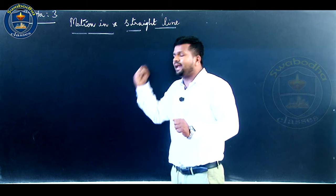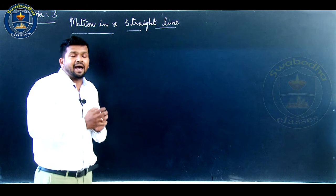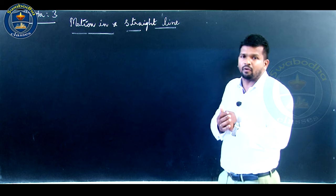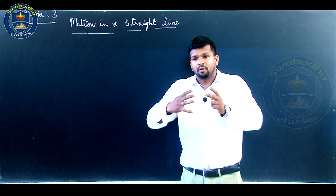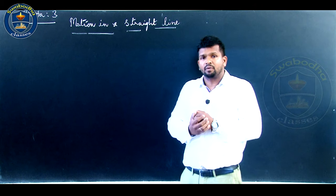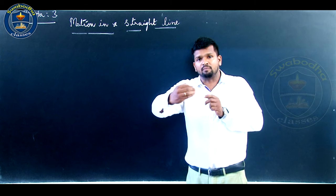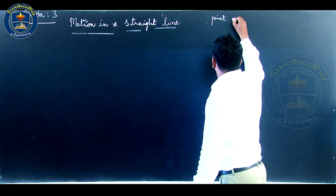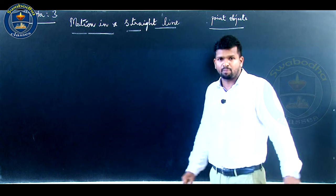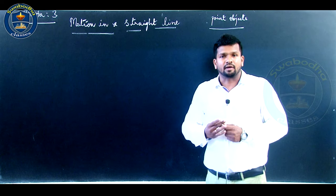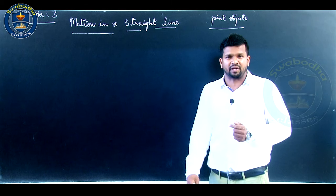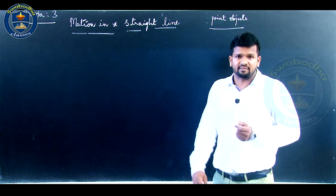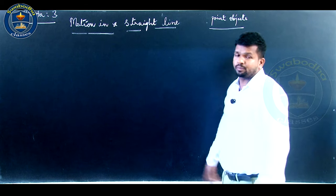Throughout our discussion, we are going to treat objects as point objects. This approximation is valid when an object covers a large distance in a reasonable duration of time compared to its size — that is, when the size of the object is negligibly small compared to the distance travelled. In real day-to-day examples, we can treat many objects as point objects without much error.